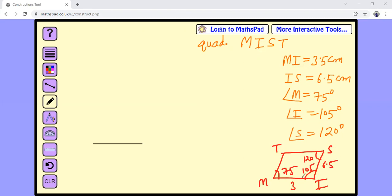So looking at this rough figure, first we have drawn this MI. Now we want to draw this angle 75 degrees. To draw 75 degrees, take compass and any convenient arc. Let's first name this line segment as MI.